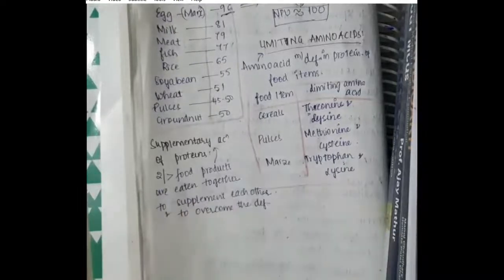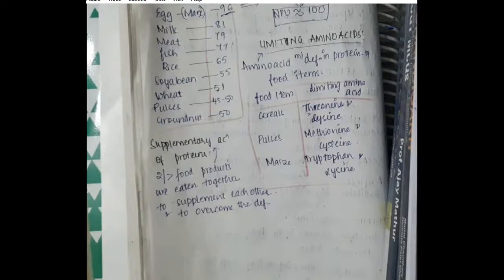For example, cereals do not have threonine and lysine, and pulses do not have methionine and cysteine. So if we combine cereals and pulses and eat them together, threonine and lysine absent in cereals can be obtained from pulses, whereas methionine and cysteine deficient in pulses can be obtained from cereals. This is how we use the concept of supplementary action of proteins. These are important points according to the SPM view of proteins. Thank you.